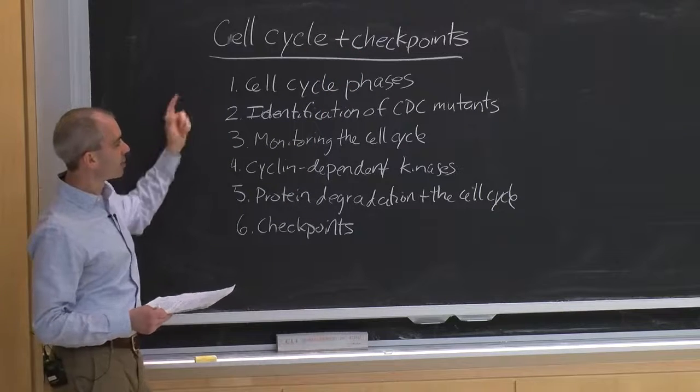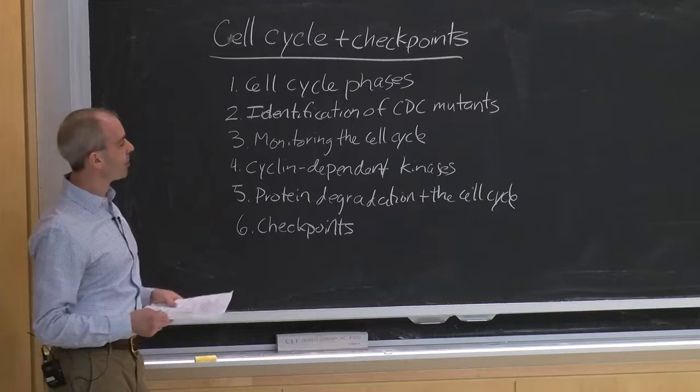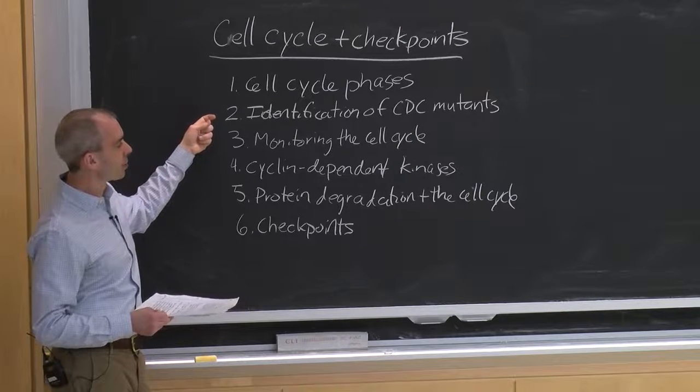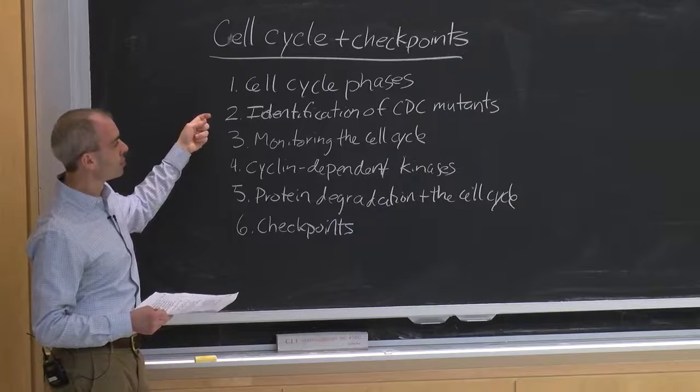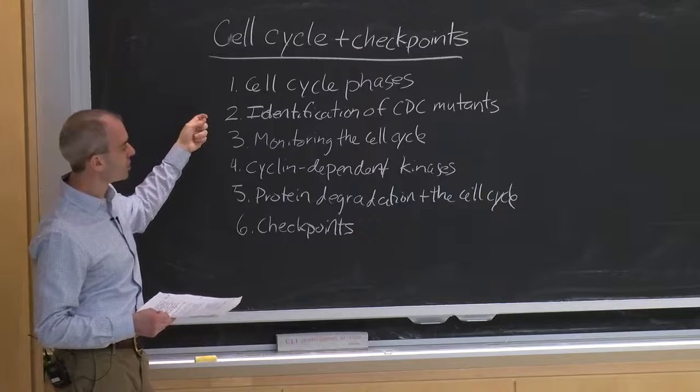Today we'll begin by talking about the different cell cycle phases and then talking about the different players that are involved in this. So we'll talk about genetics that were useful in model organisms, including budding and fission yeast to define key cell cycle regulatory mutants or CDC mutants.